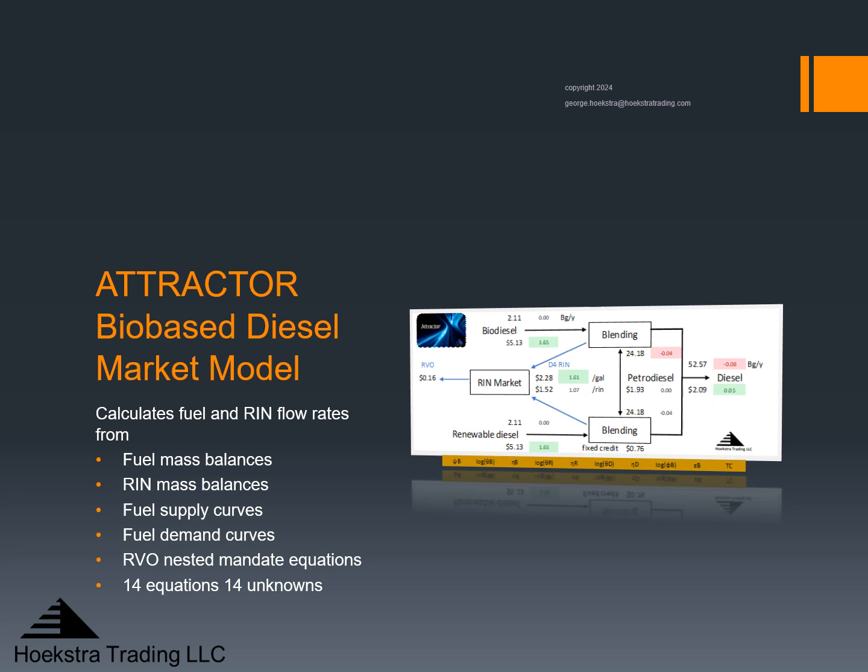The Attractor bio-based diesel market model calculates fuel and RIN flow rates and prices from fuel mass balances, RIN mass balances, fuel supply curves, fuel demand curves, and the RVO nested mandate equations. This gives 14 equations and 14 unknowns, which are solved in this spreadsheet. These equations come out of work published in the academic world — I didn't invent them — I just applied them to describe the way things are working today.